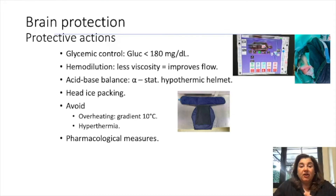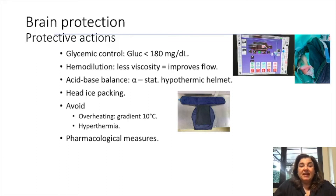Other protective actions include glycemic control, hemodilution — which reduces viscosity and improves flow — acid-base balance management using alpha-stat, head ice packing, avoiding overheating and hyperthermia, and pharmacological measures like barbiturates.